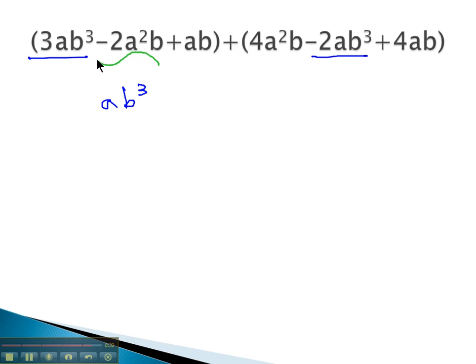Next, we see a negative 2a squared b. Can combine with the positive 4a squared b, like terms, giving us positive 2a squared b.